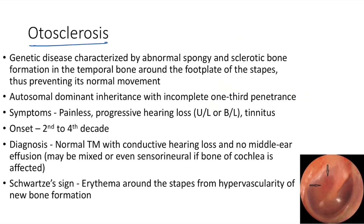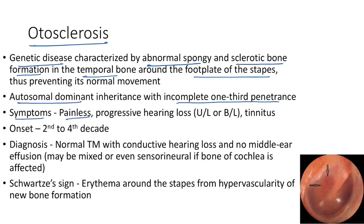Otosclerosis is a genetic disease characterized by abnormal spongy and sclerotic bone formation in the temporal bone around the footplate of the stapes, preventing its normal movement. It is autosomal dominant with incomplete one-third penetrance. Symptoms include painless progressive hearing loss (unilateral or bilateral) and tinnitus.